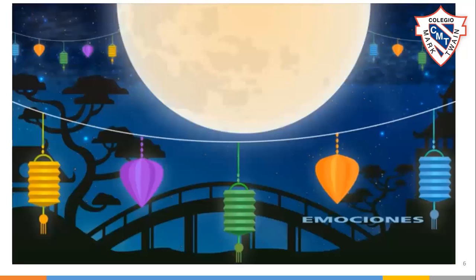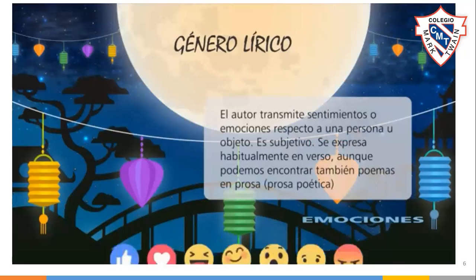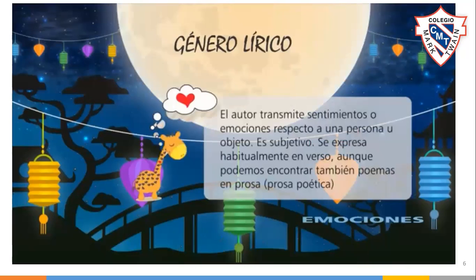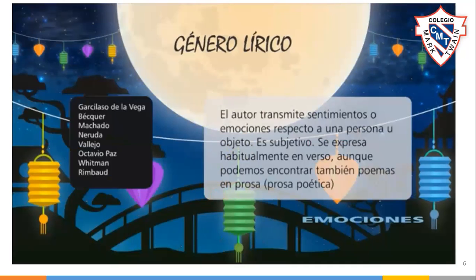En el género lírico el autor transmite sentimientos o emociones respecto a una persona u objeto. Es subjetivo. Se expresa habitualmente en verso, aunque podemos encontrar también poemas en prosa. Algunos personajes que nos dejaron obras líricas son Garcilaso de la Vega, Gustavo Adolfo Bécquer, Antonio Machado, Pablo Neruda, César Vallejo, Walt Whitman o el poeta maldito Arthur Rimbaud.